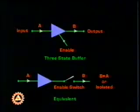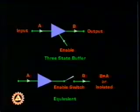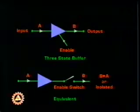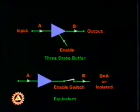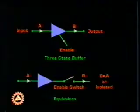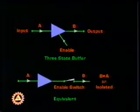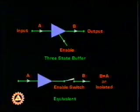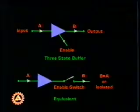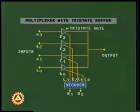A tri-state buffer is the simplest of three-state gates. It has one output, one data input, and one enable line. Enabling the gate by activating the control input makes the data appear in the output like a normal buffer. Disabling the gate leads the output to a high impedance state. As shown in the figure, a multiplexer may be constructed by tri-state gates and a decoder.